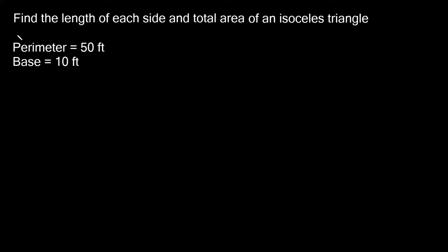Alright, so this problem here says, find the length of each side and total area of an isosceles triangle. So before doing anything, all I'm gonna do is draw a picture because a picture always really helps. So there's my isosceles triangle. You can see these two sides are the same length and then I have this third side that is different. So let's find the length of each side here.